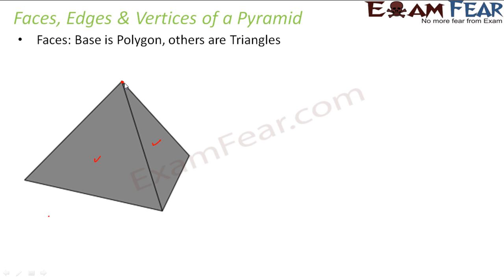The base surface is always a polygon. This polygon could be a triangle, a quadrilateral, a pentagon, a hexagon — the base could be a polygon of any number of sides. But the side faces are always triangles. As the base changes, the number of triangles which form the sides also changes.